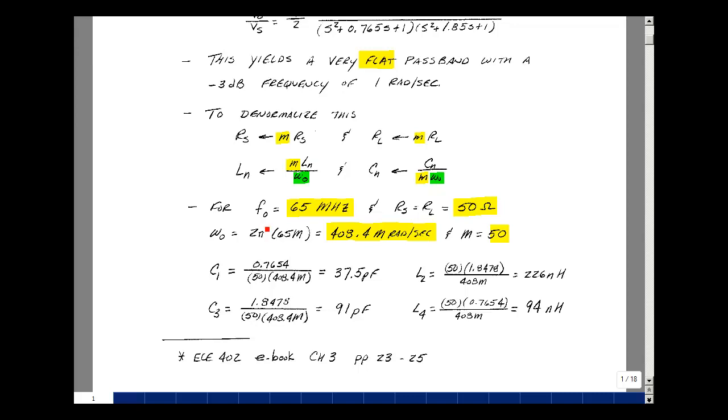We can frequency scale. If we want to make our F0 not one radian divided by 2π, but 65 megahertz, and a 50-ohm load, our ω0 then is going to go from one radian per second to 2π times 65 megahertz, which is 408.4 megahertz per second, and our scale factor for magnitude is going to be 50.